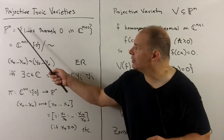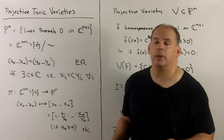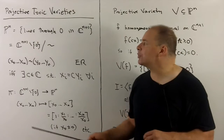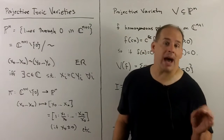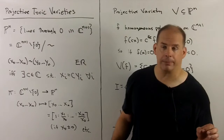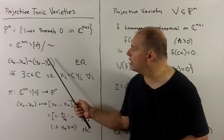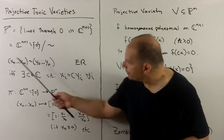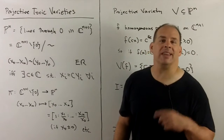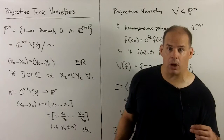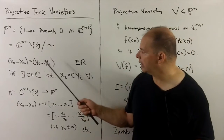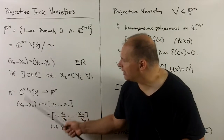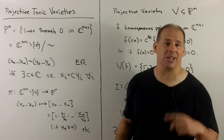With complex projective n-space, we can denote P^n. This space parametrizes the lines through the origin in C^(n+1). As a quotient space, we start with C^(n+1) minus the origin and mod out by the following equivalence relation: two points are equivalent if they are scalar multiples of each other as vectors, meaning they live on the same line through the origin. We'll denote the quotient map by pi, carrying each point in C^(n+1) minus the origin to its class in P^n.